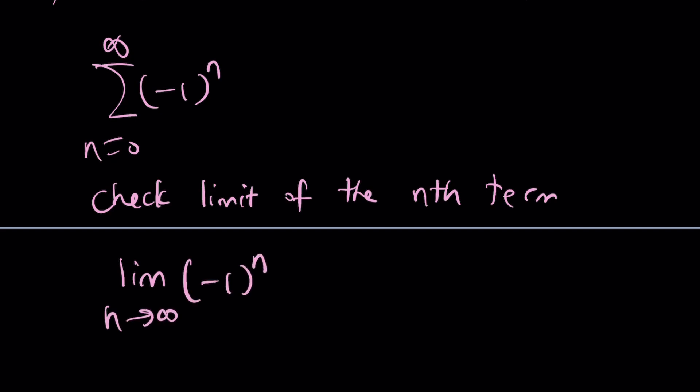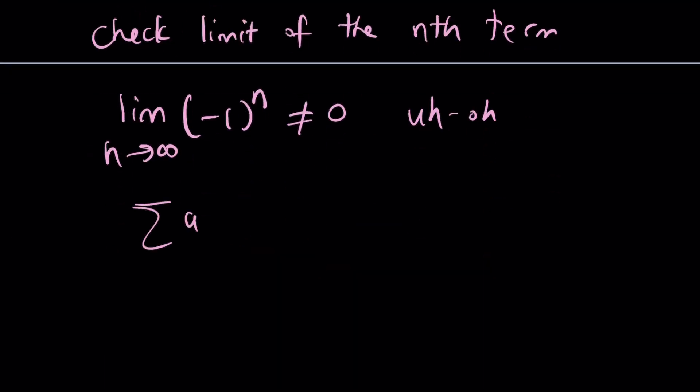Obviously, as n approaches infinity, this is going to bounce around negative 1, 1, negative 1, 1, negative 1, 1. So it's not going to be 0. We know for sure that this limit is never going to be 0. Uh-oh. That means this diverges. And what I mean by this is actually our series given with the general term negative 1 to the power n. So there is no sum that we can find.